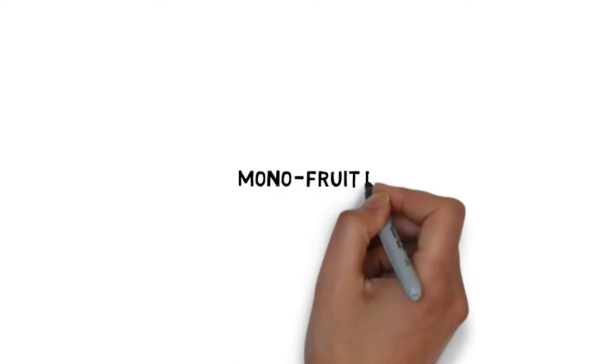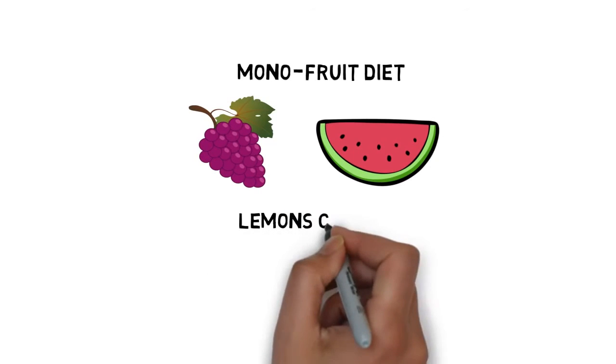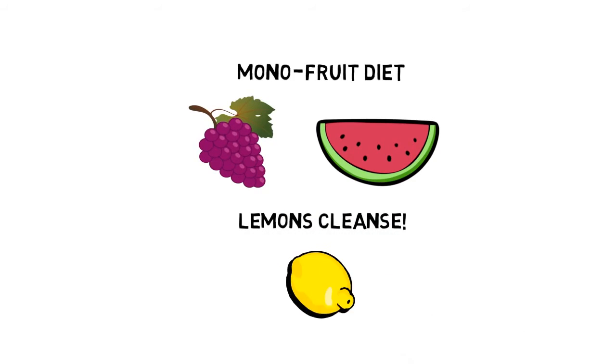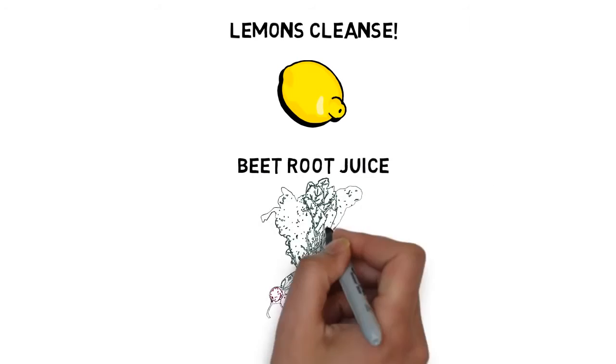For extra power, try a 100% grape or watermelon diet for a few days or even longer. A lemon juice fast can really kick start stubborn kidneys. Try beetroot juice for a few days but it's very powerful so I'd mix it with other juices.